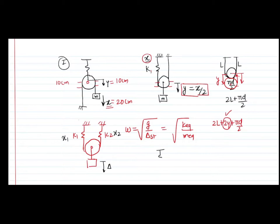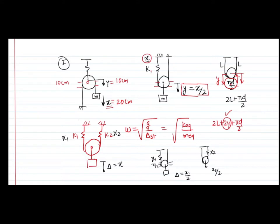We can understand this using superposition. In case one, assuming only one spring: if the displacement in the first spring is X1, the displacement of the center will be half, because X1 is distributed as X1/2 on each side. So delta contribution from spring 1 is X1/2. Similarly, for spring 2 with deformation X2, the center moves down by X2/2. Ultimately, with two springs, the total change in position of the mass is X1/2 plus X2/2.